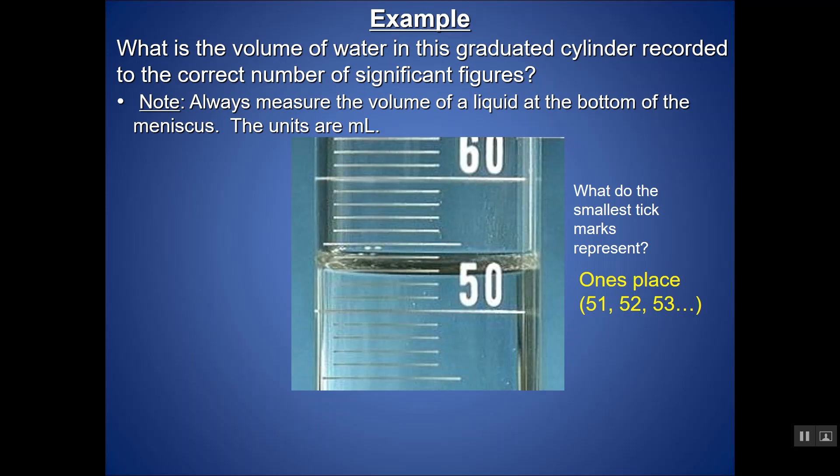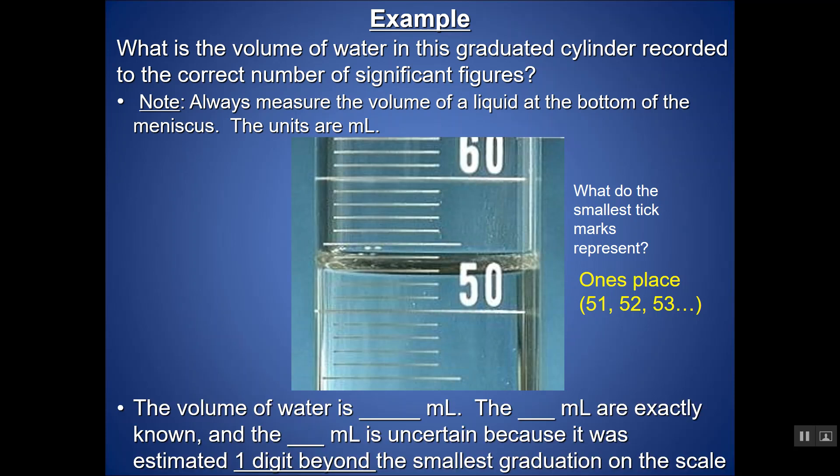From person to person, we might disagree on what that next digit should be. So I might say it looks like there's 52.8 milliliters. And another person might say it looks like 52.9 milliliters. So what we want to do is we want to record all the numbers that we can agree upon, all the digits that are known with certainty based off of the scale that's represented on my piece of equipment, plus one uncertain digit that we might not all agree upon.